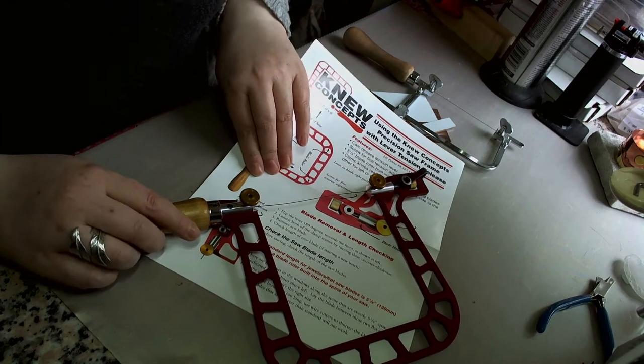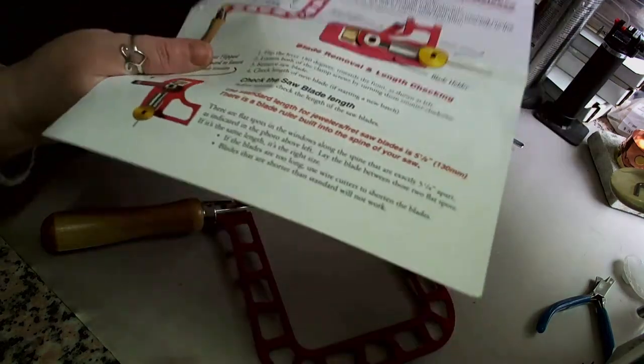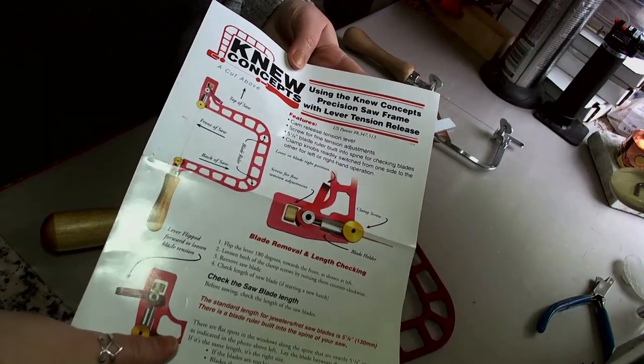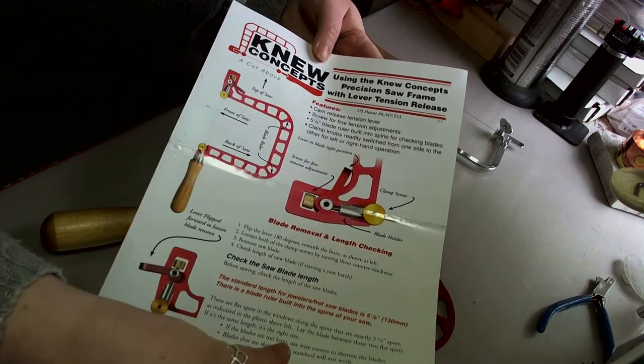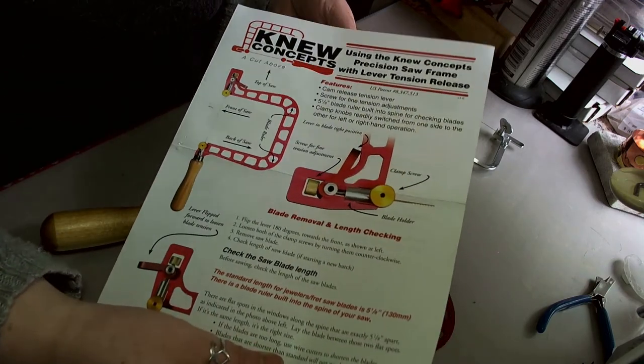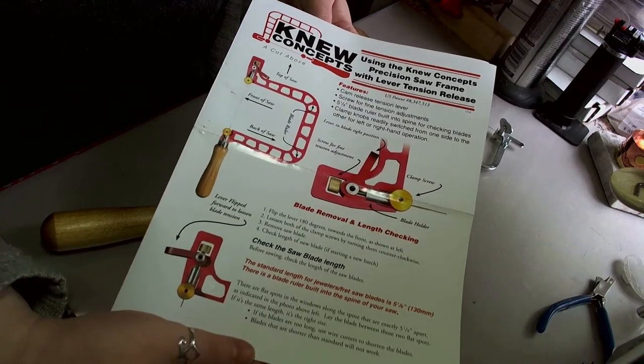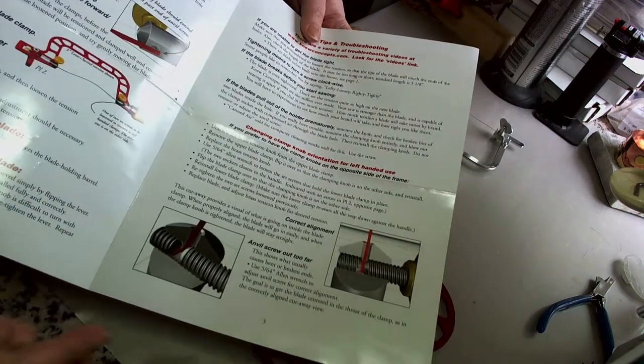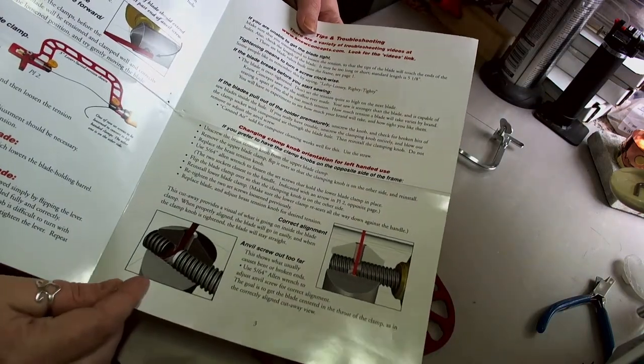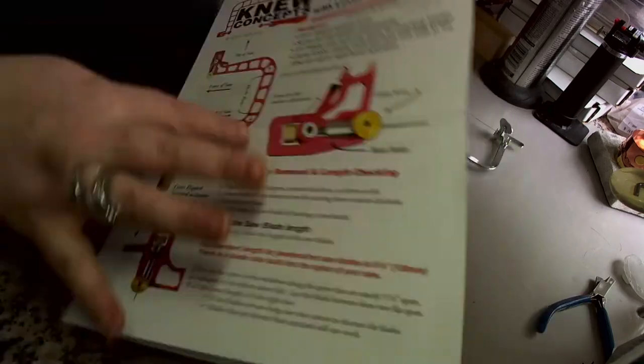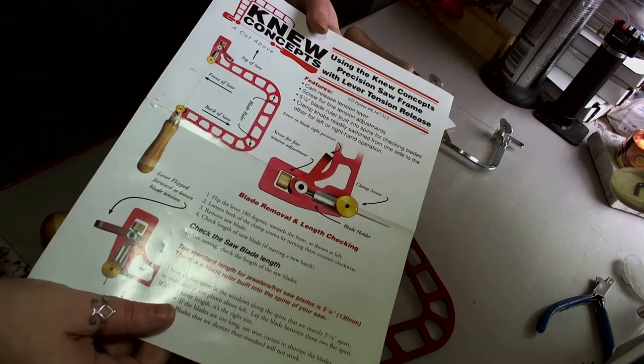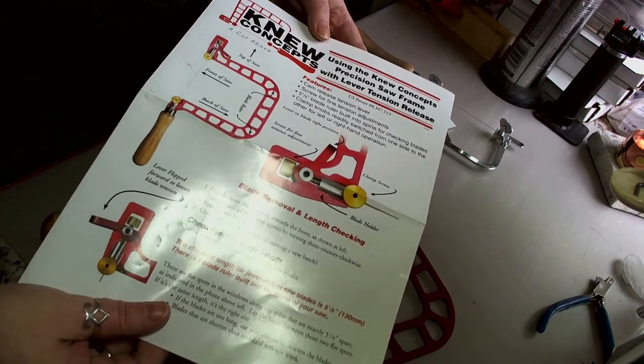When you get the New Concepts saw and open it up for the first time, in the packaging you'll find this information sheet. It gives you all the information you need to know about how to use the saw, how to change the blade, and problem solving for any future problems that could possibly happen. I do recommend that you keep this information sheet just in case you need to refer to it in the future.